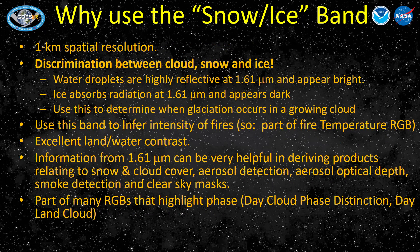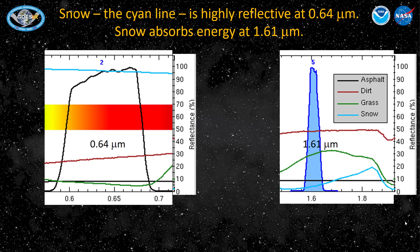The snow ice band at 1.61 micrometers will importantly discriminate between clouds, snow, and ice. This is especially useful if you're monitoring glaciation of developing convection. Compare the reflectance of snow, shown in the cyan line, in the visible on the left at 0.64 micrometers — highly reflective — compared to the 1.61 micrometer snow ice channel on the right — not very reflective at all. Snow and ice appears gray or black in the 1.61, while it will appear very bright in the visible.